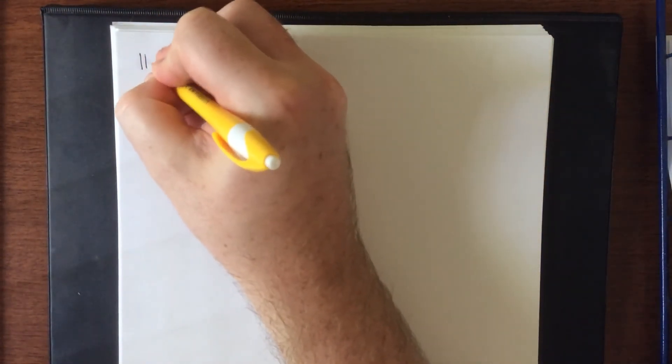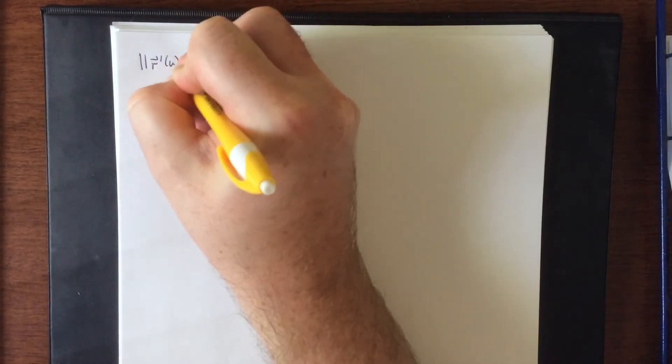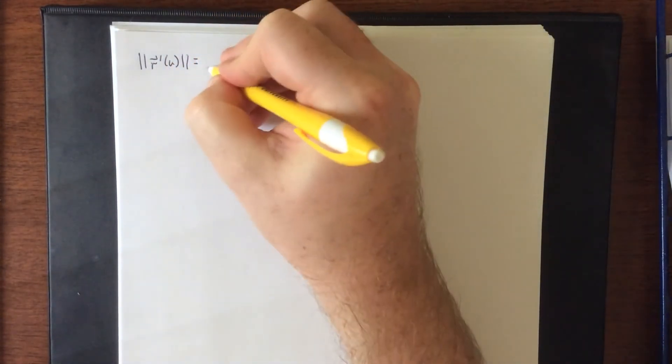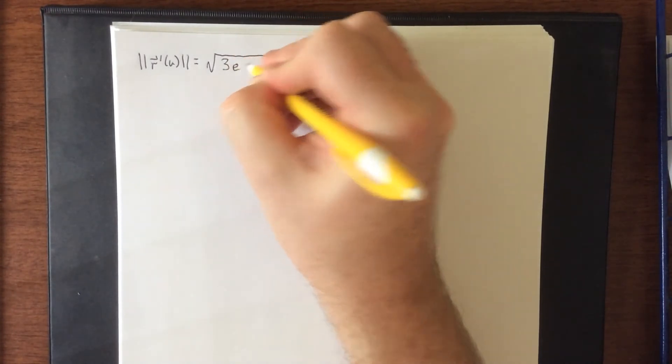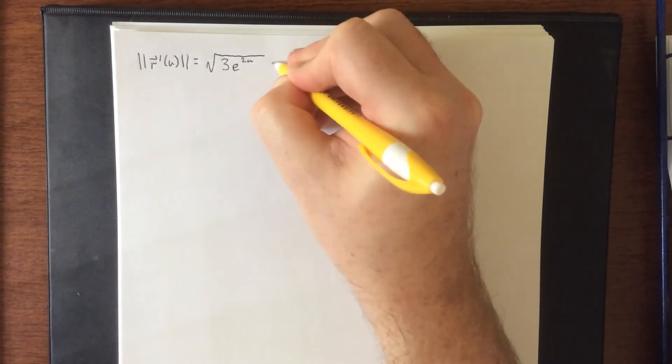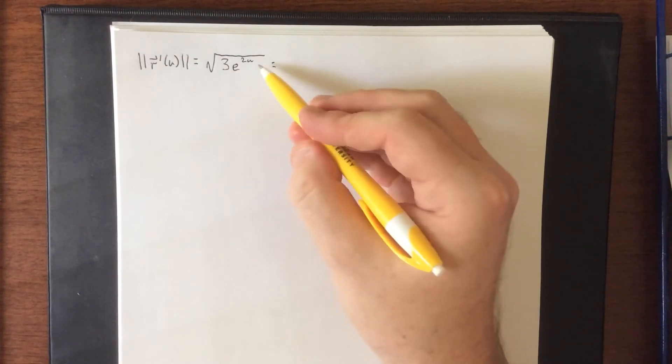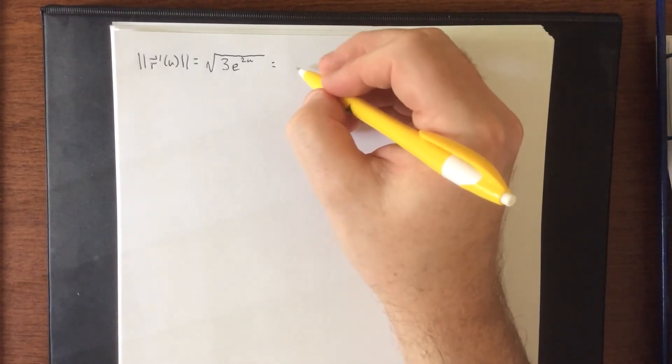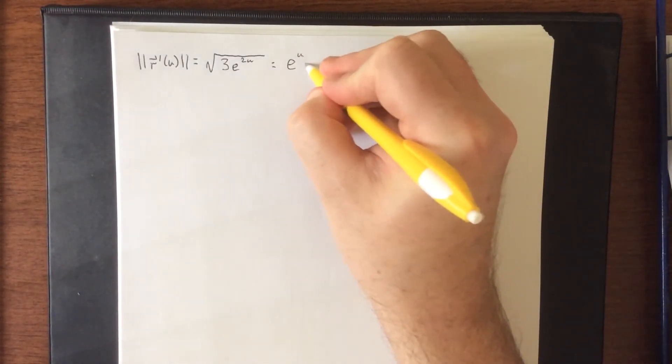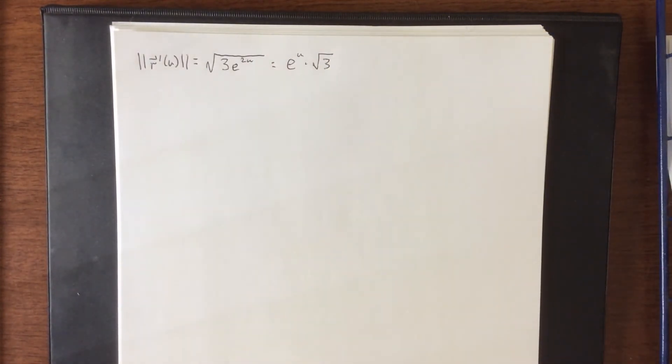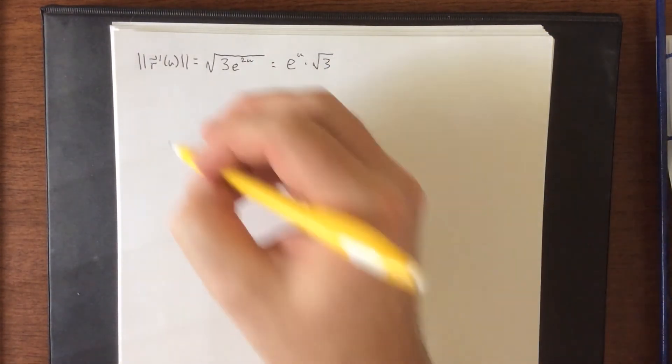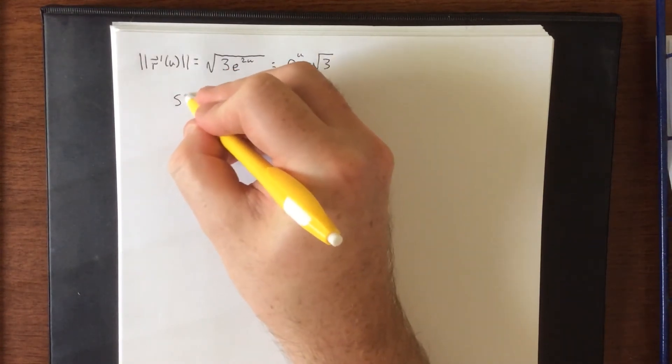So this means that the magnitude of r prime of u, and here's where I'm going to switch all my t's back to u's, is going to be the square root of what we just got, which was three e to the two u. Now the good news is, e to the two u has a really nice square root, and that would be e to the u. Three does not have a nice square root, so we're going to leave it as the square root of three.